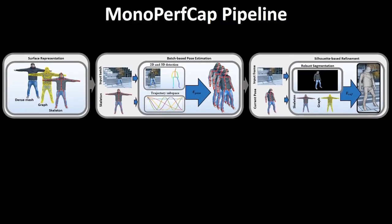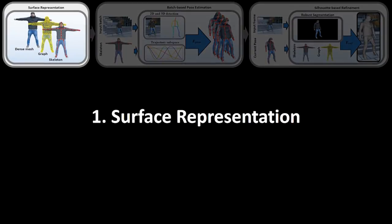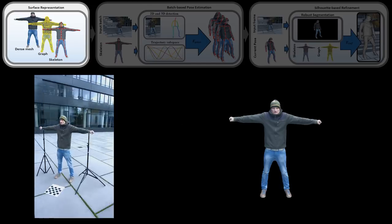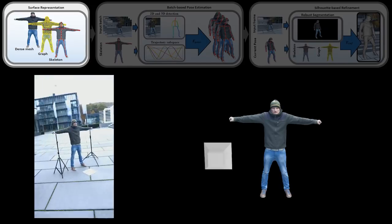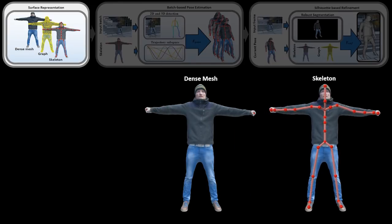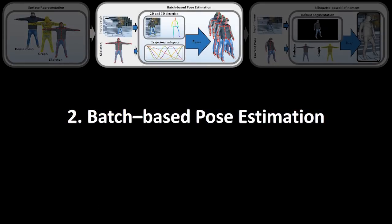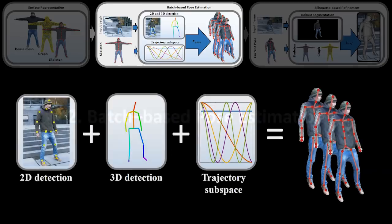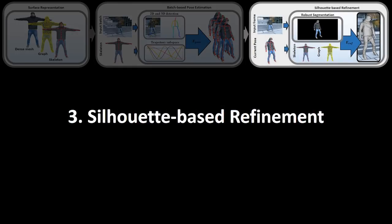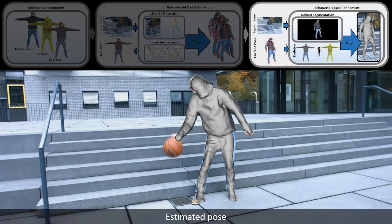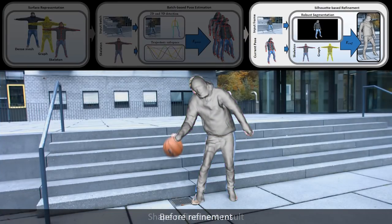Mono-PerfCap is based on three main components. First, we acquire a personalized actor model using a video from a handheld camera. The actor model is rigged with a spectral skeleton and an embedded graph. Second, we estimate 3D motion based on a novel batch-based optimization strategy. We propose a combination of discriminative 2D and 3D joint detections and a trajectory motion prior that allows to resolve depth ambiguity. Finally, residual misalignments to the input are corrected based on a non-rigid registration of the model to fully automatically extracted silhouettes.